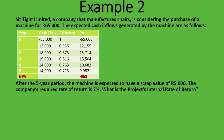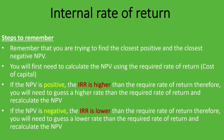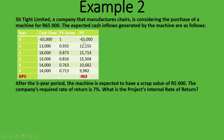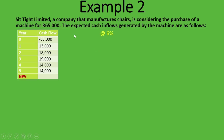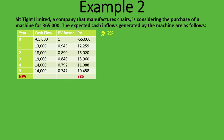The NPV is negative, so according to our rules, the IRR is lower than the required rate of return of 7%. We need to guess a lower rate. Let's try 6%. Using the present value factors at 6% for each year and multiplying by the cash flows, then summing the present values, we get an NPV of positive 785 rand. Now at 7% the NPV is negative and at 6% it's positive, so the IRR is between 6% and 7%.